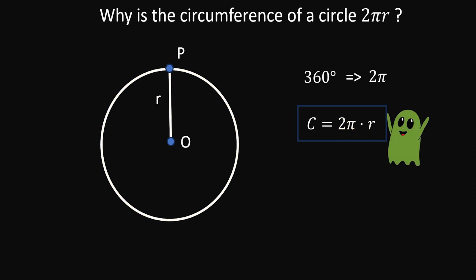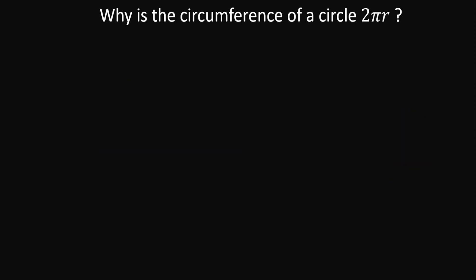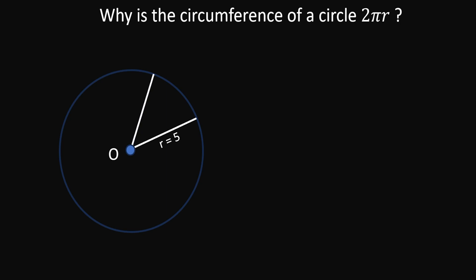You can use this method not only to calculate the circumference of a circle but also to calculate the length of any circular arc. For example, if we have a circle with radius 5 and we want to calculate the length of the circular arc L over a 30-degree angle, the length L equals the angle covered times the radius r.